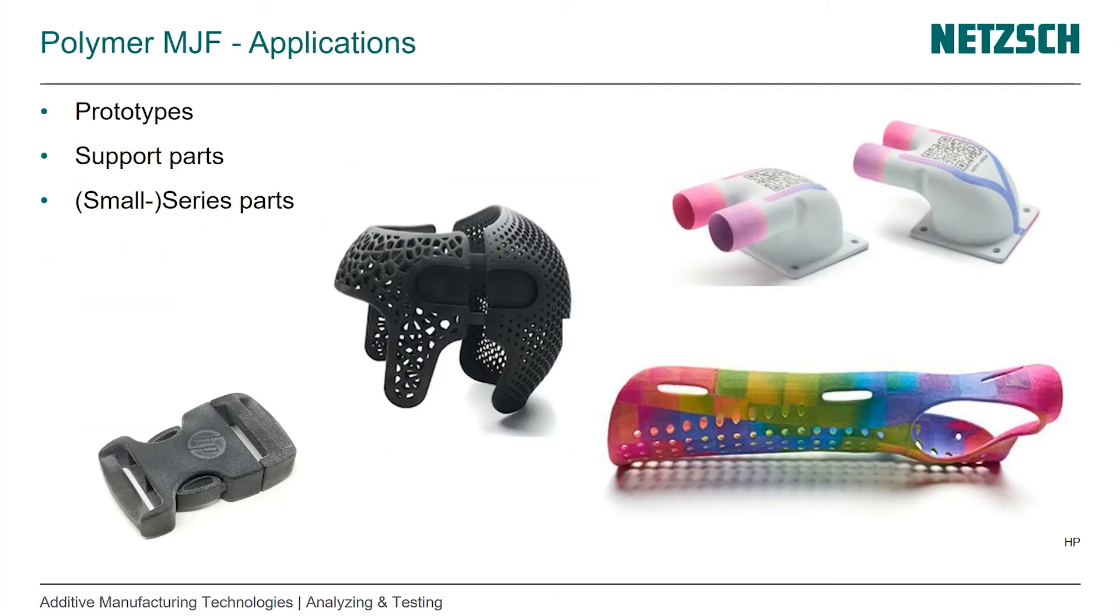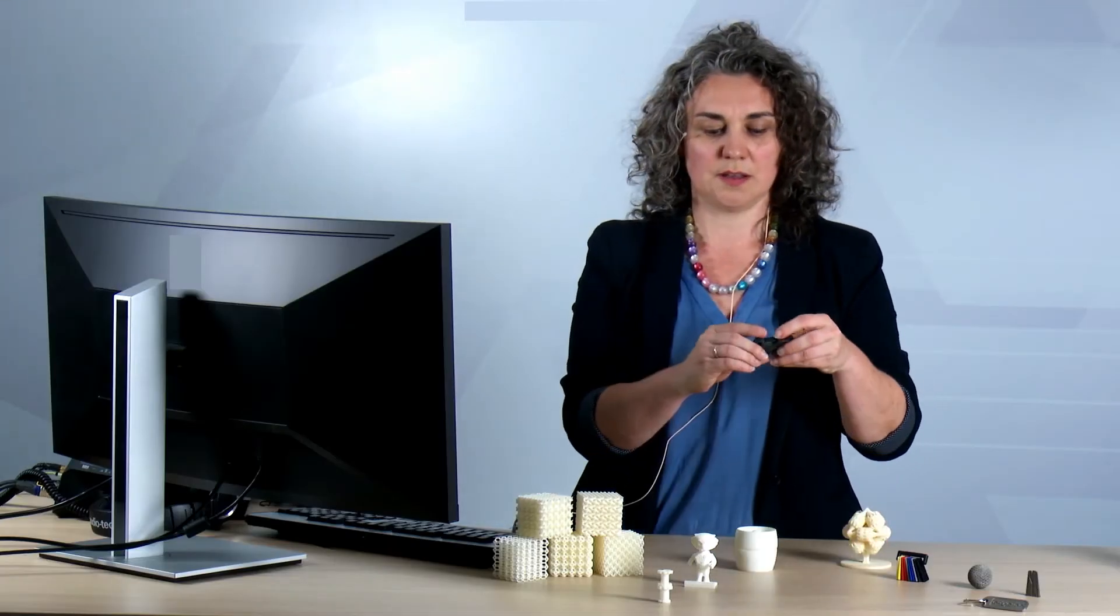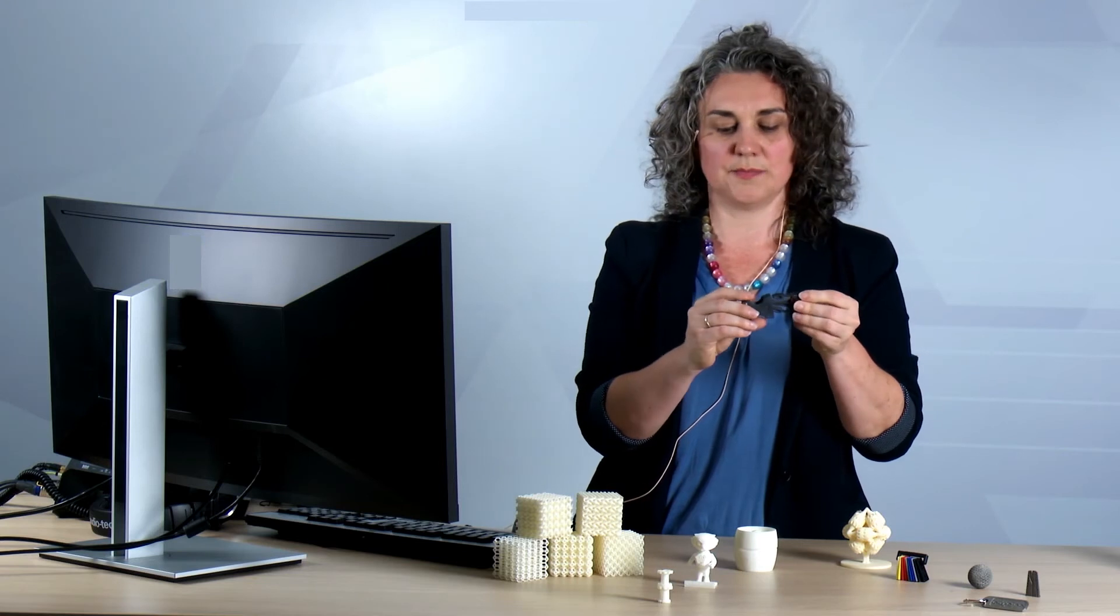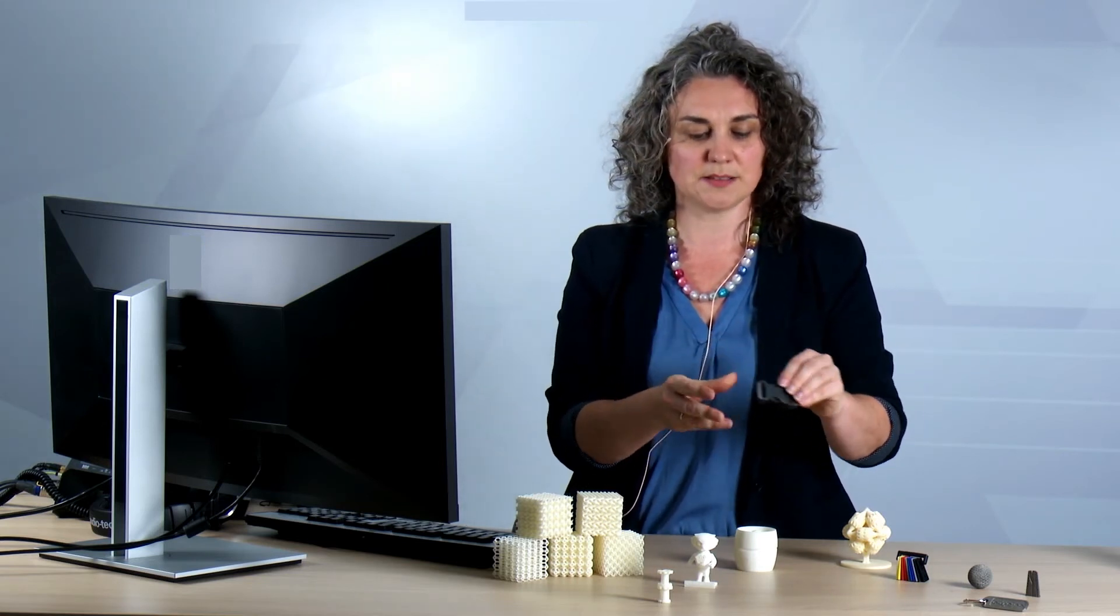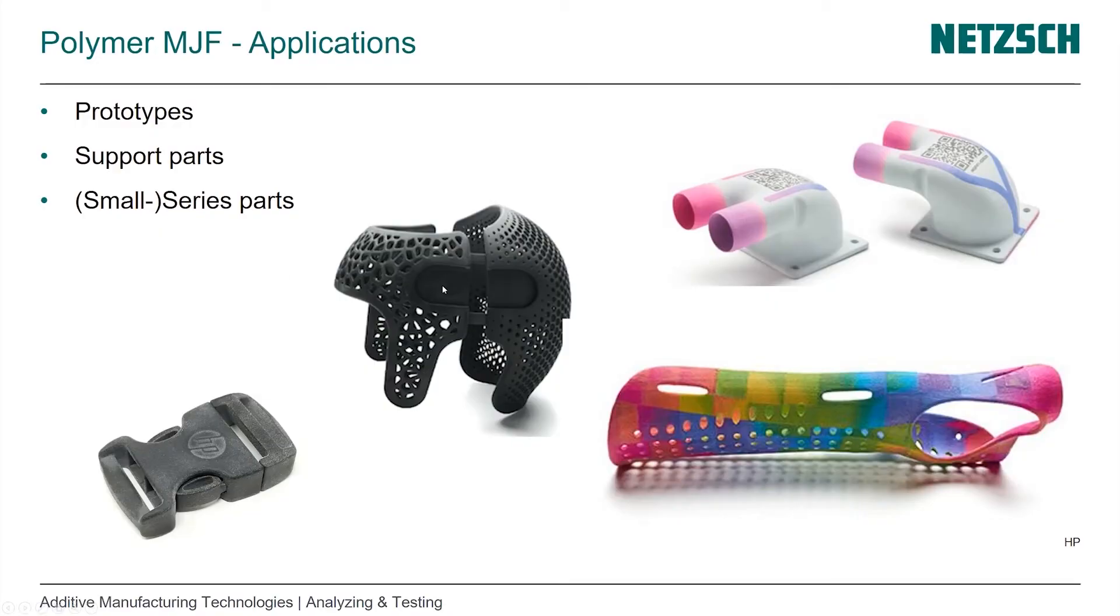Here you see examples of applications: prototypes, support parts, and small series parts. Here's a buckle for a backpack or something else. I have the same as a demo part that I got for class at UW Madison. This is a helmet for babies and toddlers to support the growth of their head in the right shape.